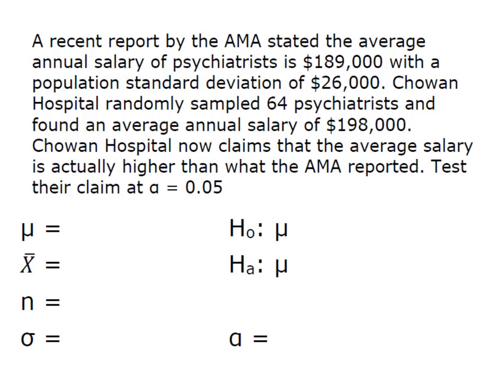I'm going to pull out all the information that I need from the question. The established value for the mean is $189,000 and we were given a population standard deviation, our value of sigma, of $26,000. Chowan Hospital randomly sampled 64 psychiatrists which is my n.